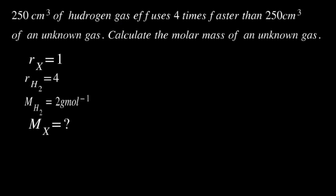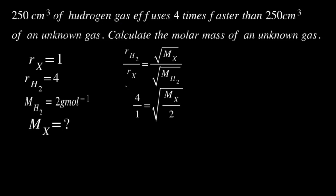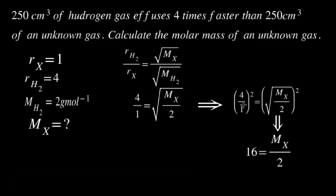Applying Graham's equation and squaring both sides to eliminate the square root: 4² = 16, and the molar mass of x equals 16 × 2 = 32 g/mol. Therefore, Mₓ = 32 g/mol, which is the molar mass of oxygen. So the unknown gas is oxygen.